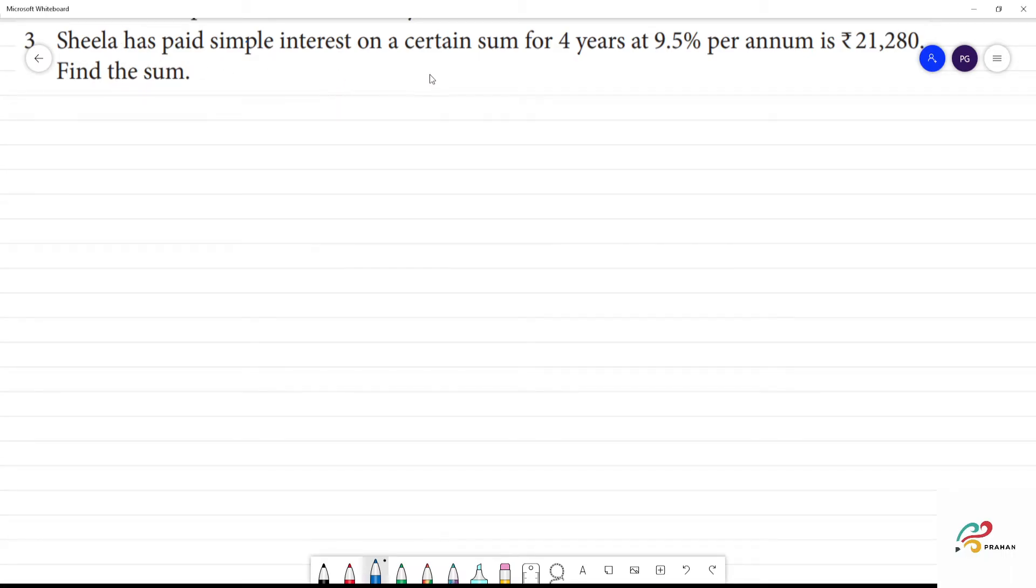Sheela has paid simple interest on a certain sum for 4 years at 9.5% per annum is Rs. 21,280. Find the sum.